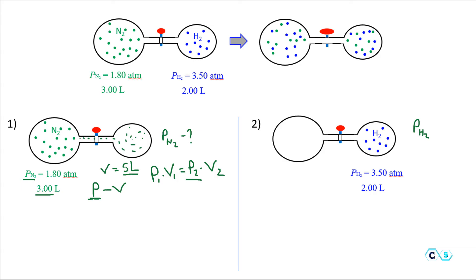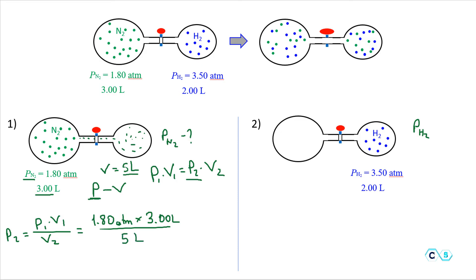We can write that P₂ = P₁ × V₁ / V₂, which gives us 1.8 atm multiplied by 3 liters over the final volume of 5 liters. This equals 1.08 atm — the partial pressure of nitrogen in the new mixed system. Does this make sense? Initially it was 1.8 atm, and now it occupies a larger volume, so the partial pressure of nitrogen went down because the volume increased.